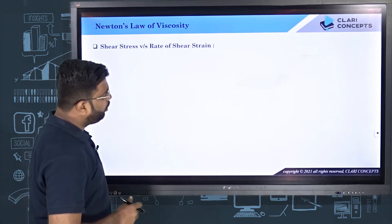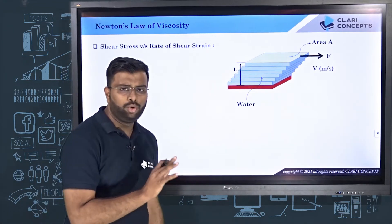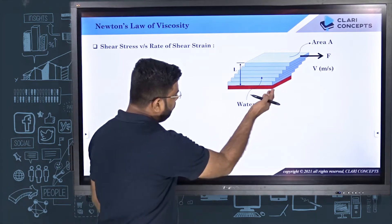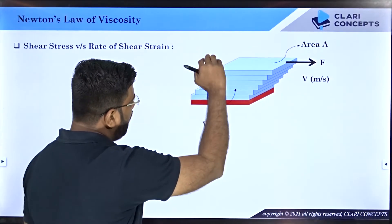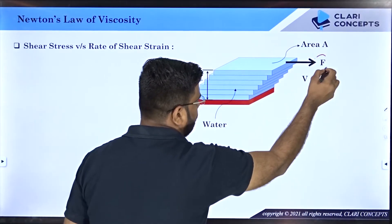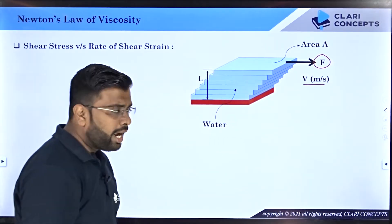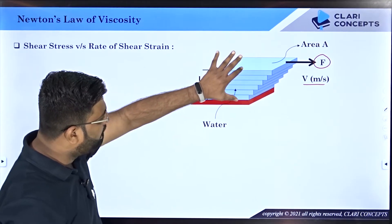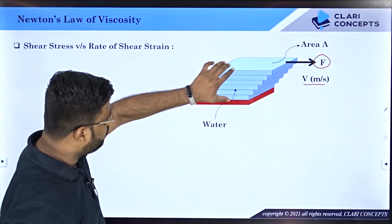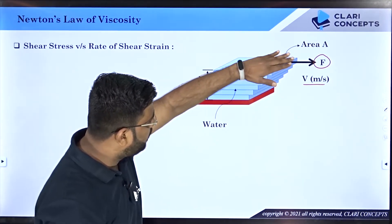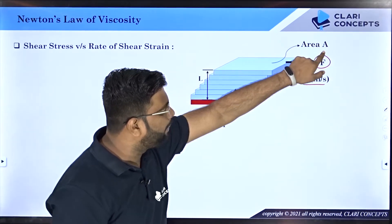Before I move on, I would like to brief you about what we have discussed in Newton's law of viscosity. We had two different plates: lower plate and upper plate. The upper plate was given a force of F Newtons, and because of this, the upper plate was moving at a velocity of V meters per second. Between both plates we have a fluid field with a thickness of L meters, and the wetted area of the plate is capital A.